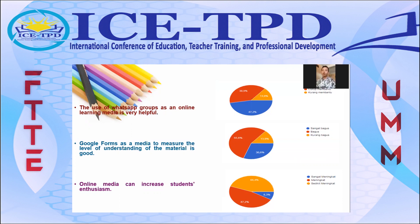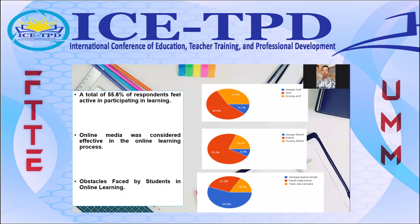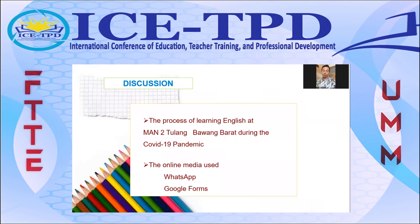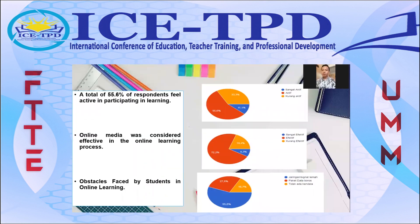The fifth question: 'Online media can increase student enthusiasm.' Results show 8.3% answered totally agree, 47.2% answered agree, and 44.4% answered doesn't agree. The sixth question: a total of 55.6% of respondents feel active in participating in the learning process. The seventh question: 'Online media was considered effective in the online learning process.' Results show 8.3% answered very effective, 72.2% answered effective, and 19.4% answered less effective.